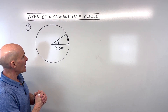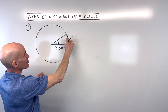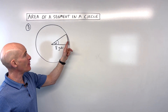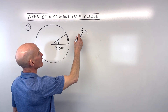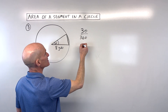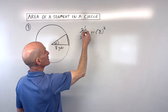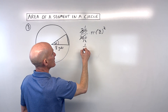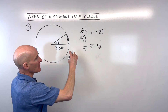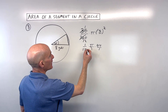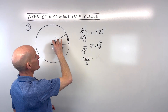For number three, we've got this triangle inside the circle. First we need to find the area of the sector, then subtract off the triangle to get the area of the segment. Using the fraction method: 30 divided by 360 times pi r squared — that's pi times 8 squared. This reduces to 1/12, and 8 squared is 64, so we have 1/12 times 64 pi. Four goes into 12 three times and into 64 sixteen times, giving 16 pi over 3 as the area of the sector.